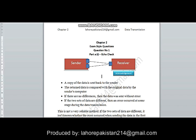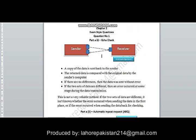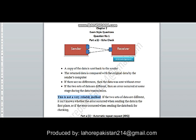This is how echo check works, but as you can see, this method is not very efficient. The sender has a lot of work to do — it has to send the copy, receive the copy back, and compare the two. There is double load and increased traffic on the network. So this is not a very reliable method, and if two sets of data are different, it is not known whether the error occurred while sending or while receiving the data.